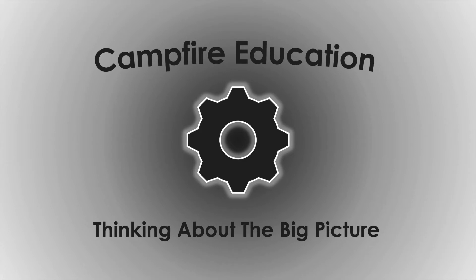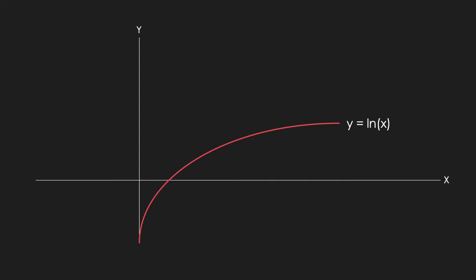Without further ado, let's get started. First things first, we need to draw our function. Just like many of our other logarithmic equations, the natural log has a similar shape with an asymptote at x equals zero.